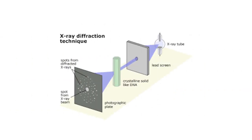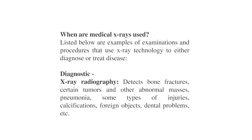Here is another image showing the x-ray diffraction technique — the x-ray tube, lead screen, crystalline solid, and photographic plate are shown. The patient is positioned and deflected x-rays form a spot from the beam. Listed below are examples of examinations and procedures that use x-ray technology to diagnose or treat disease.